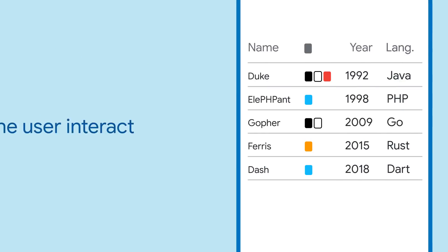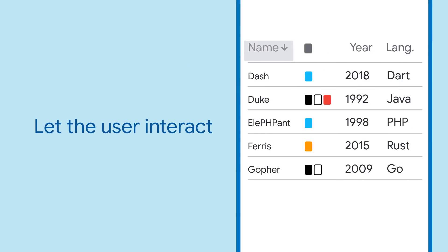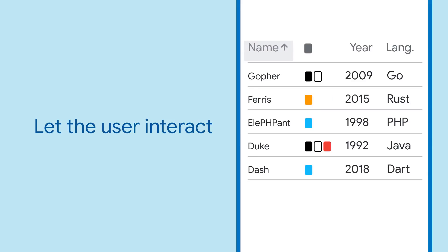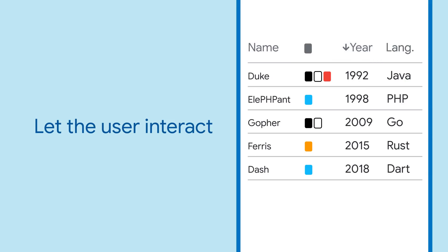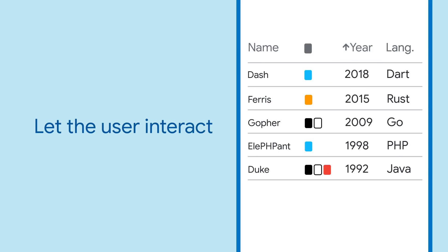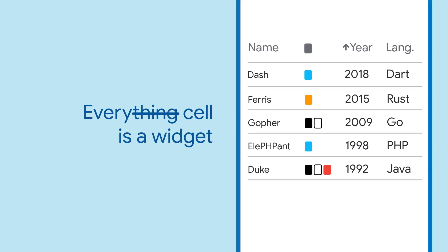All the elements of the data table provide friendly callbacks so you can implement how the user should edit, select, or sort the data. Also, don't forget that everything is a widget, so feel free to put any widget into your data cells.